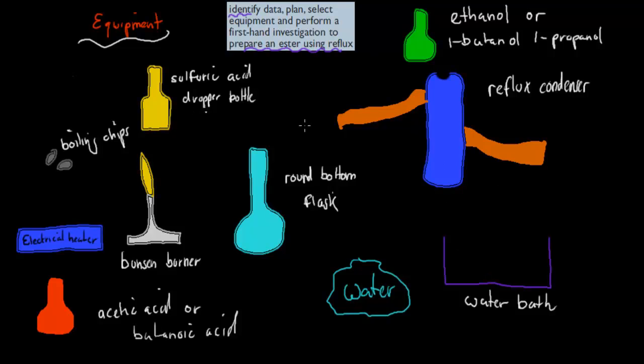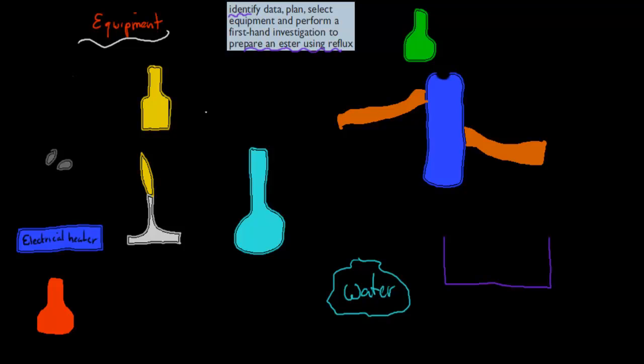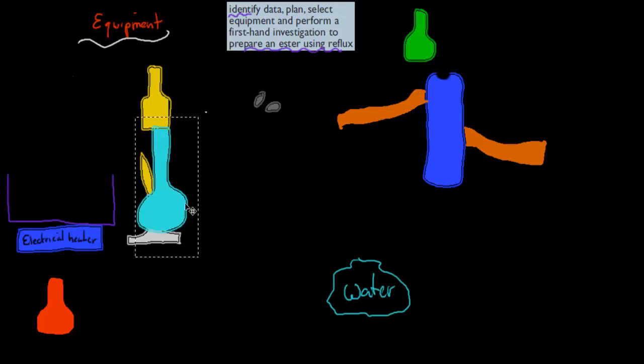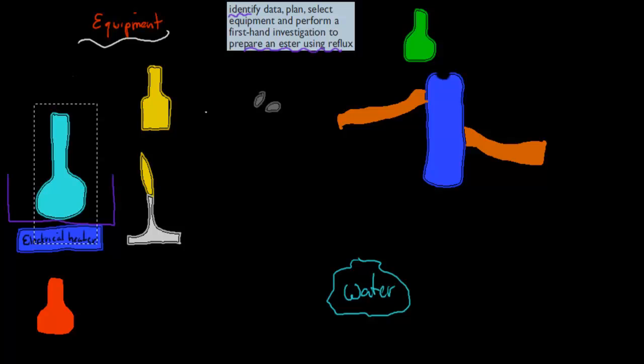So that's your equipment you would have had, and now I'm going to set up the actual experiment, or what you might have done, something similar to what you might have done in class. So you had these are the things you had. We used the electrical heater. So you might have also grabbed the water bath. Then you would have filled that up, you would have put your round bottom flask in it. You would have put some water on it as well, just to absorb some of that heat.